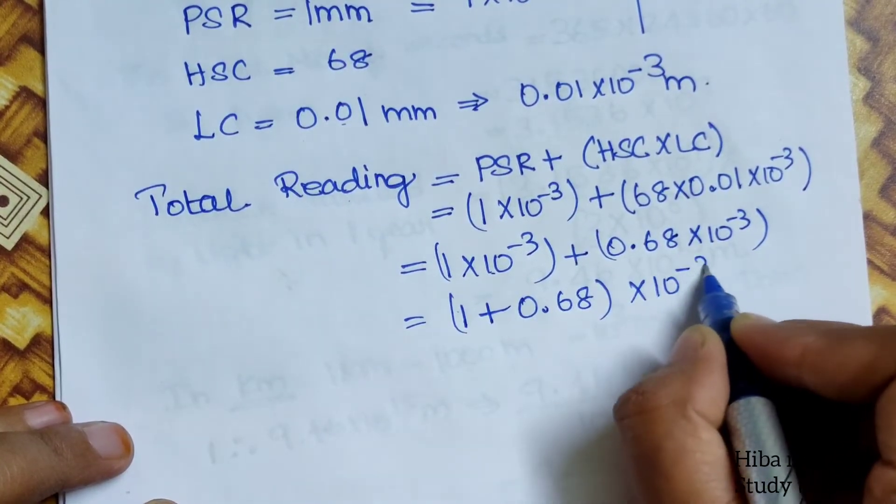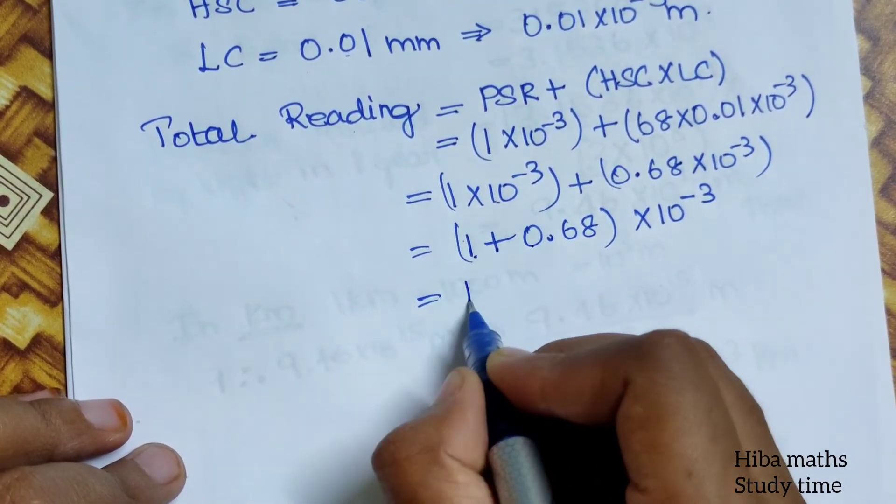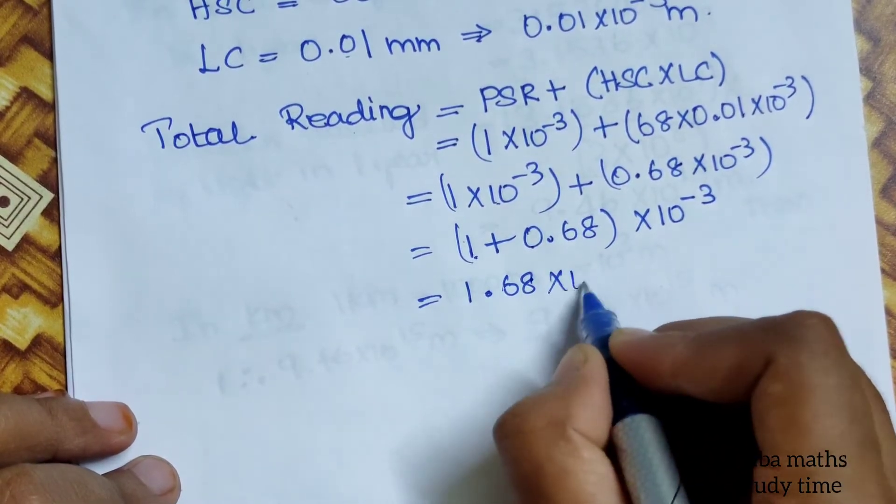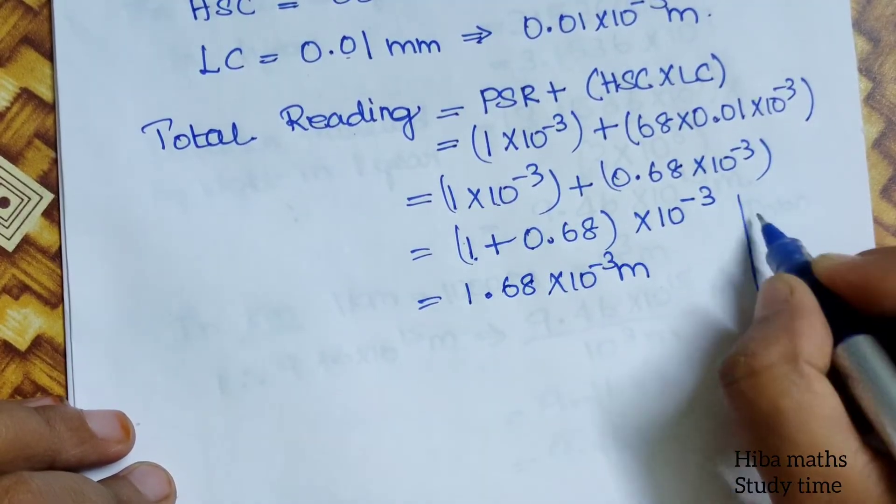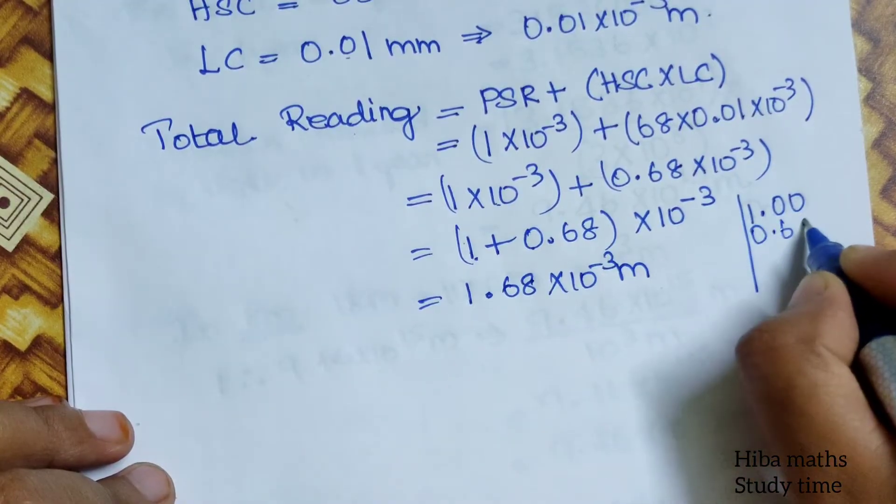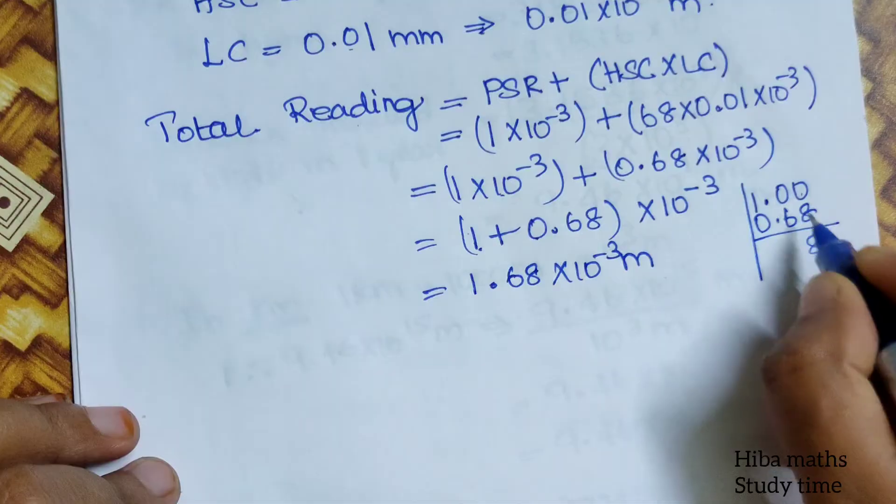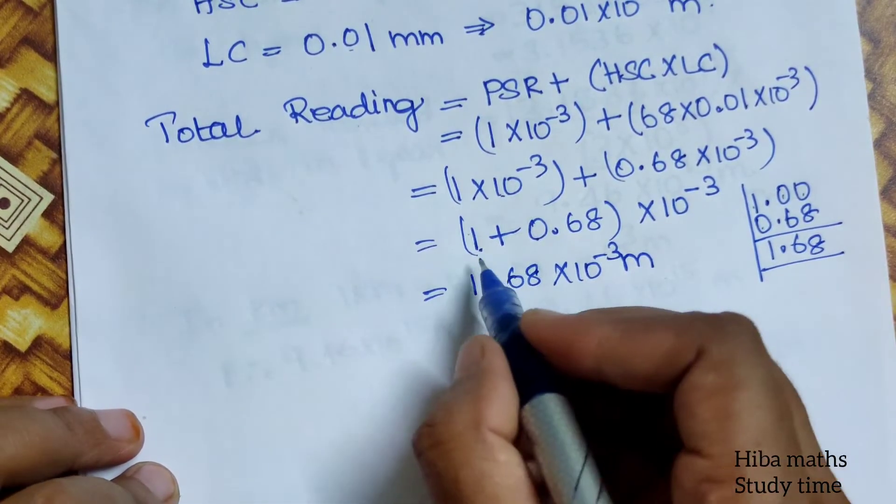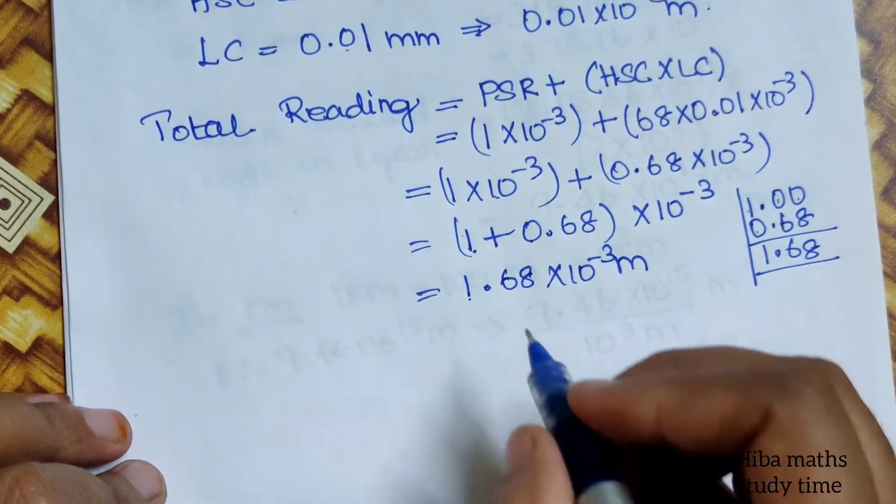This 1 into 10 power minus 3, this is 10 power minus 3. So the common is 10 power minus 3. 1 plus 0.68 into 10 power minus 3. Now you will know, 0 plus 8 is 8, 0 plus 6 is 6, 1 plus 0 is 1, so 1.68. Direct 1 new 0, add 1.68 into 10.